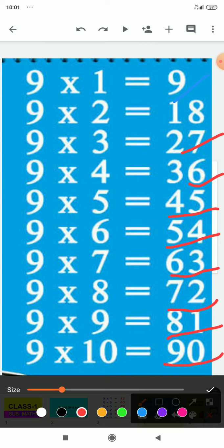We will read it again. Let's start: 9 times 1 is 9, 9 times 2 is 18, 9 times 3 is 27.